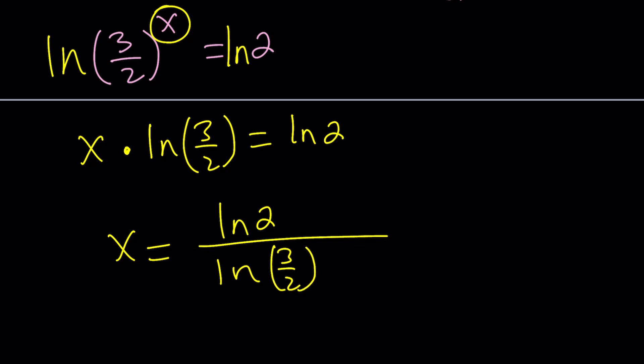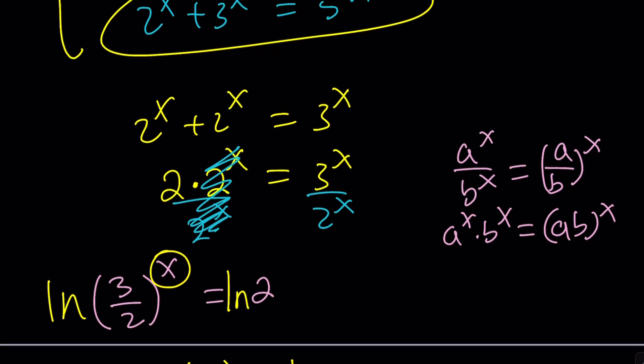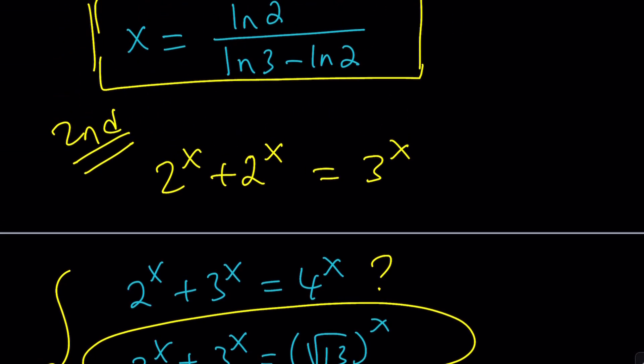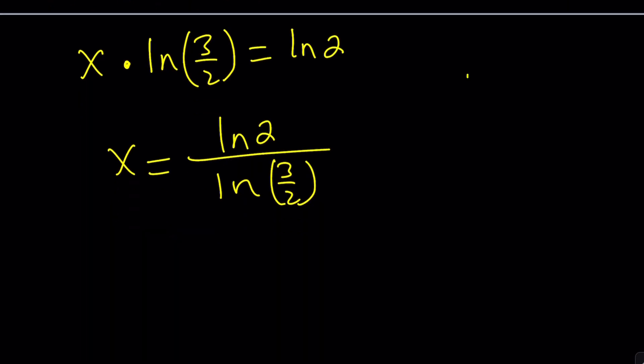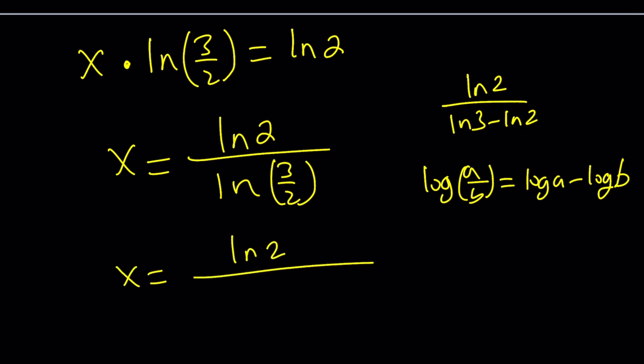See, this is different from the first approach because with the first one, we combined the exponents. This time, we didn't. So now, we're going to go ahead and ln both sides. Of course, you need ln to bring this x down. And that's going to give us x ln(3/2) = ln 2. And by way of division, of course, you're going to get x = ln 2 / ln(3/2). But wait a minute. Let's go ahead and compare this result to the first method. Did we get the same thing? Because this looks different.